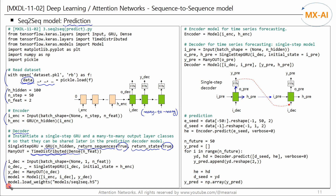We instantiate the output layer class using the TimeDistributed class. For the decoder, we create an input layer — since the decoder is single-step, we set the time-step dimension to 1. Then we create a recurrent layer using the single-step GRU instance, feed the decoder input into it, and also feed the encoder output to initiate the hidden state. We create the output layer using the many-out instance, then build the encoder-decoder model, which has two inputs and one output.